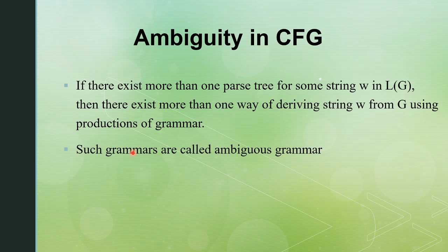Such grammars are called ambiguous grammars. In terms of derivation trees, we have left derivation and right derivation. If two parse trees are the same for both left and right derivation, then the grammar is unambiguous. In the case of ambiguous grammars, we have different parse trees for different ways of deriving.